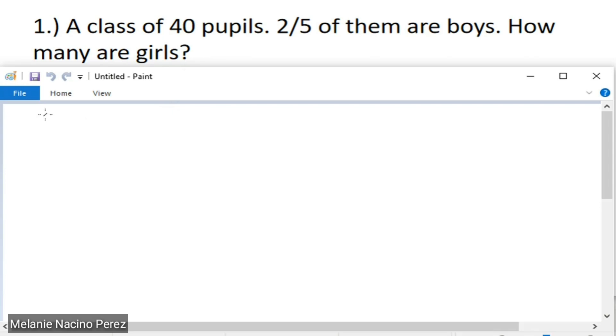First step to solve this problem is we need to find out how many are boys. So, what we need to do is multiply 40 pupils, 40 over 1, multiply by two-fifths. Remember guys, all whole numbers have a denominator of 1, so 40 over 1. In multiplication, this is very easy. All you have to do is multiply numerator to numerator, and denominator to denominator. So, 40 times 2 equals 80, and then 1 times 5 equals 5.